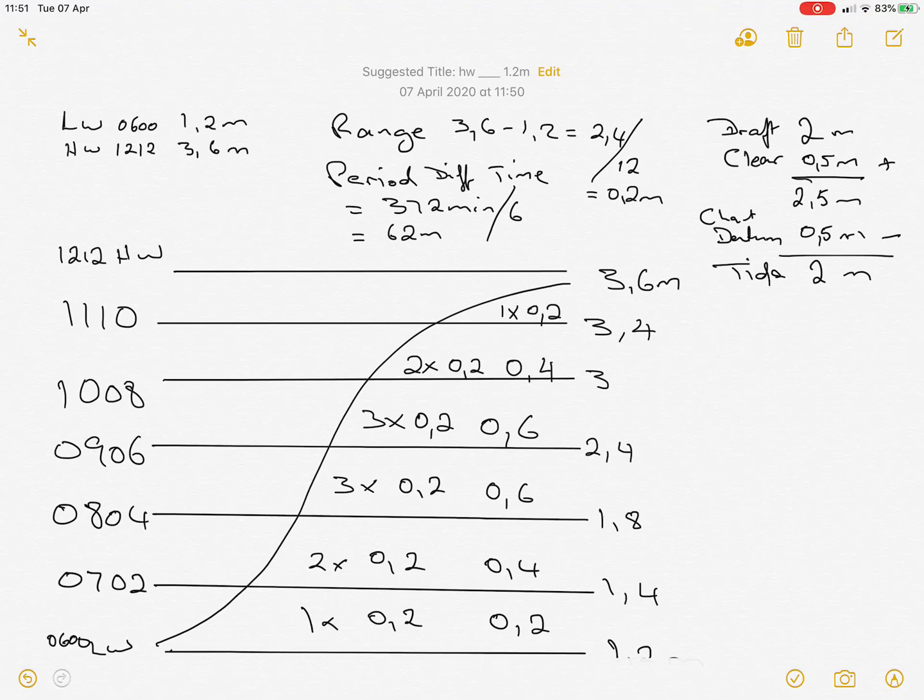Okay, this exercise is working out tidal differences using the rule of twelfths. In an area where you have a reasonable range, say 1.5 to maybe 2.5 meters, you can use the rule of twelfths.